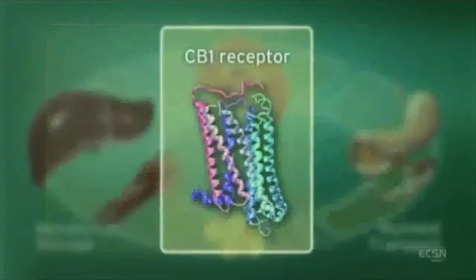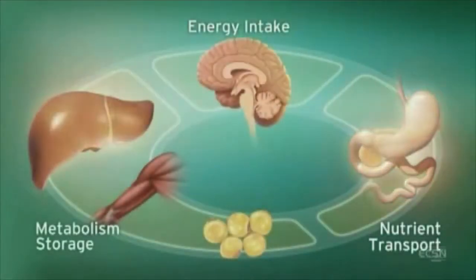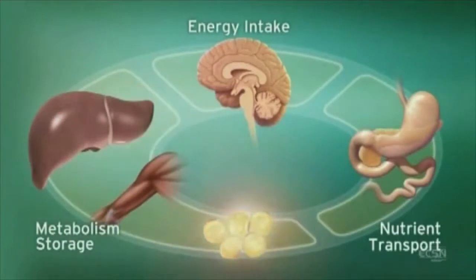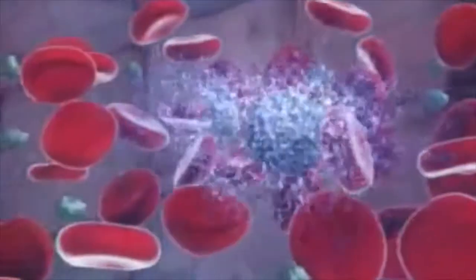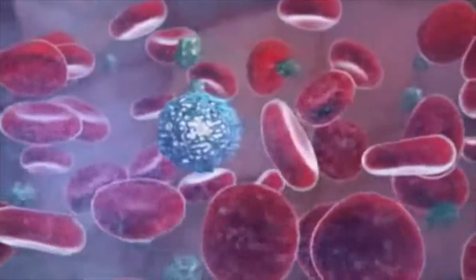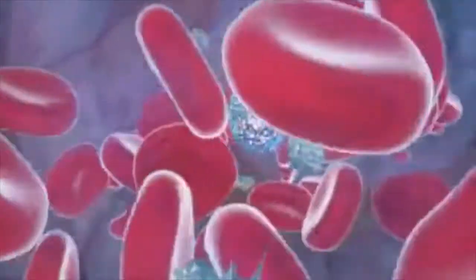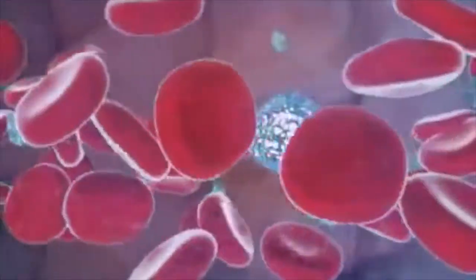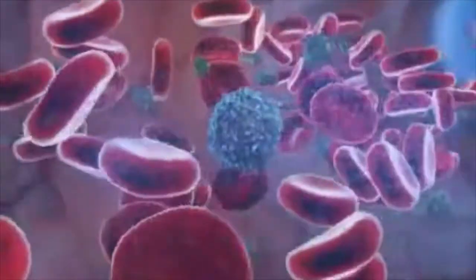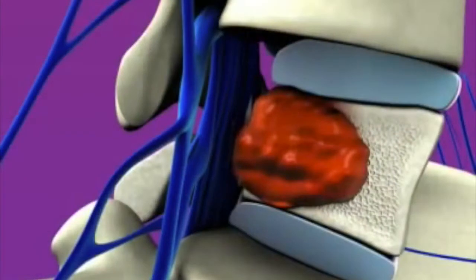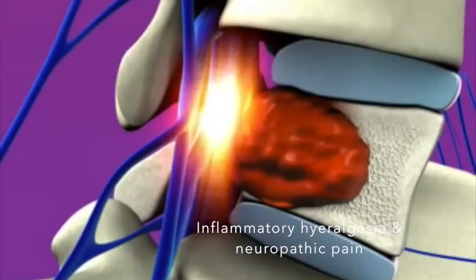These ligands act on CB1 receptors which are widely dispersed in the brain, particularly in areas involved in the perception of nociceptive stimuli. These endocannabinoids also interact with CB2 receptors located in the immune system. There is increasing data indicating that the activation of these CB2 receptors generates anti-nociceptive responses, particularly in situations of inflammatory hyperalgesia and neuropathic pain.